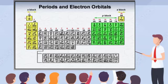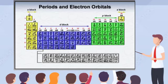Starting in period four, the transition metals in the B groups represent the filling of D orbitals and are known as the D block. The inner transition metals belonging to periods six and seven represent the filling of F orbitals, and are known as the F block elements.